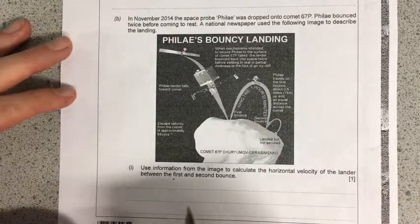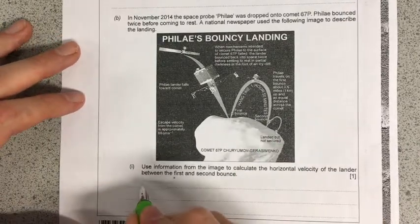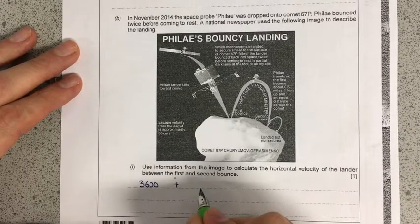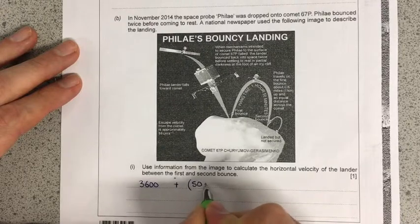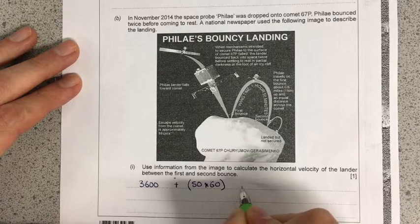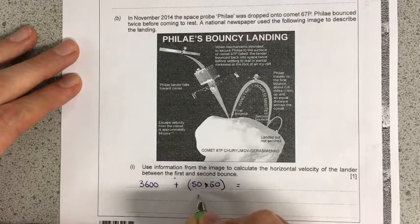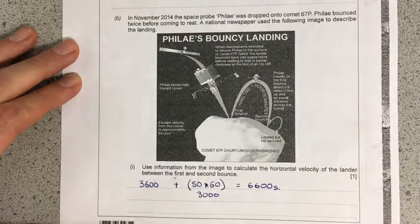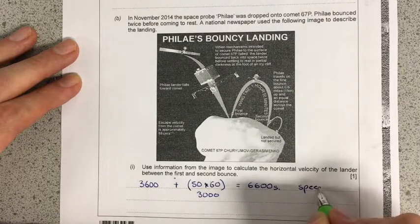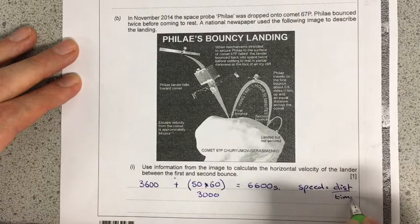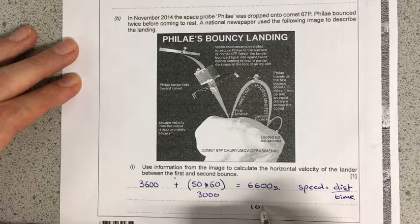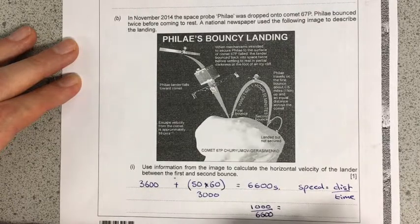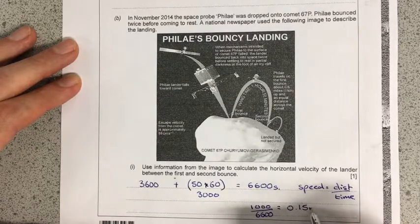So the first thing I'm going to do, because I like to work in seconds, is turn this into seconds. So one hour is 3,600 seconds. And we've got 50 minutes times 60. So I'm going to pop that in here. And I've worked those out already to be 3,000 and 3,600. So that gives us 6,600 seconds. And then I'm going to do speed equals distance over time, just like I would have done at GCSE. When I solve that, I end up with 1,000 metres over 6,600 seconds, and when I do that, I get an answer of 0.15 metres per second.